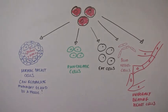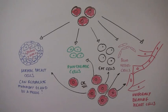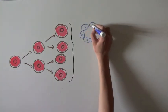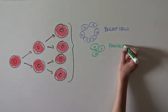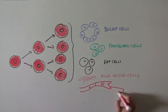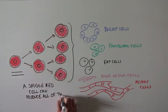To confirm that all of these different types of cells could be produced from one red cell, instead of many red cells that can each make one type of tissue, they took single cells, allowed them to divide, and then did the same assays looking for their ability to produce breast, pancreatic, fat, blood vessel, and heart cells. And the scientists found that a single red cell could produce all of these tissue cells.